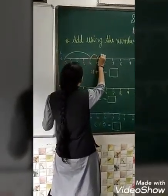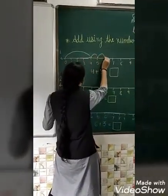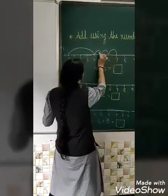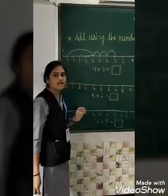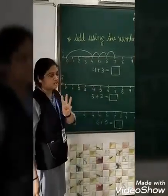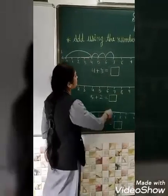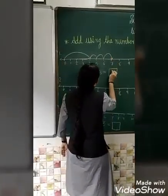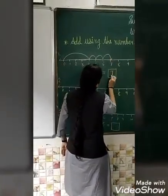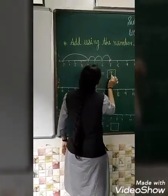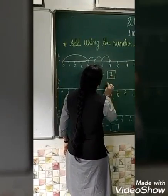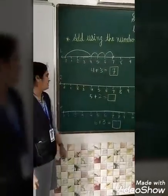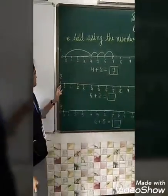We jump: 5, 6, 7. That is 1, 2, 3 — how many jumps? 3 jumps. So here we get the answer: number 7. What is the answer? 7.